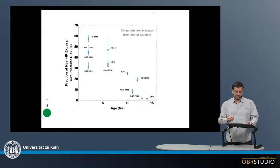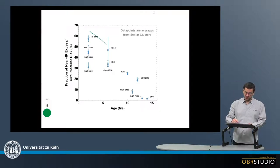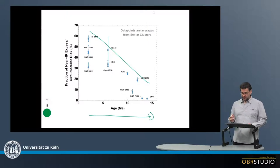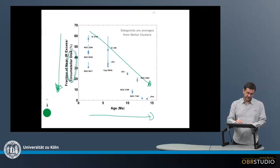Now there's a very interesting correlation here, and that is that with increasing age, so age increases here towards the right, the fraction of the infrared excess is decreasing. Or, the fraction of the circumstellar disk is decreasing.